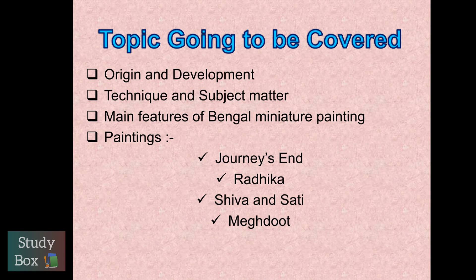We are going to cover the topics in this chapter - that is, Origin and Development. The origin covers how it happened, when it happened, where it happened. And in development, what artists came, what they achieved. We will also study the techniques used.